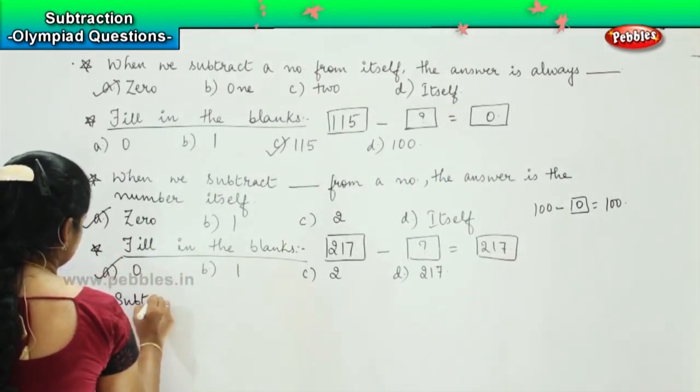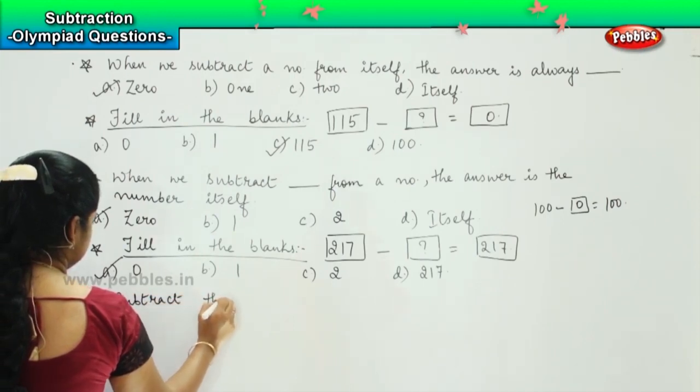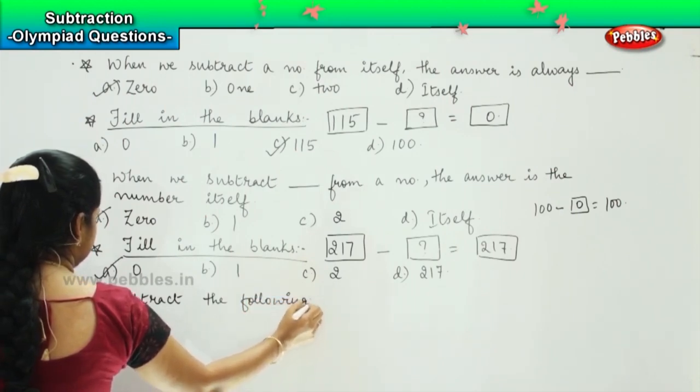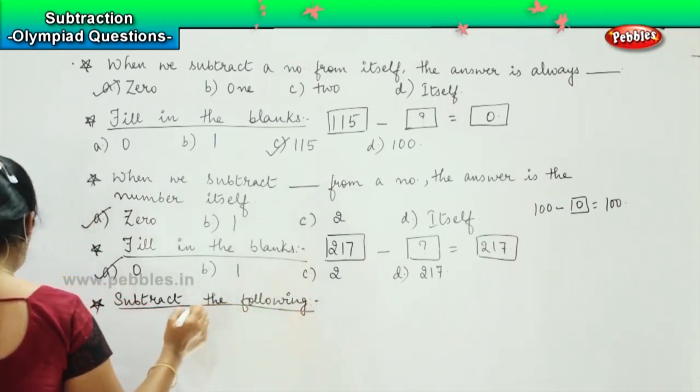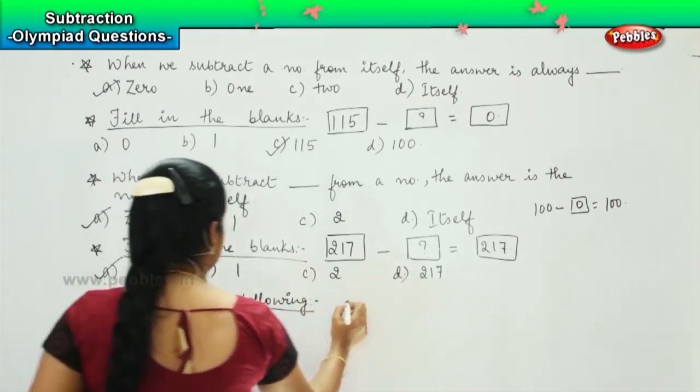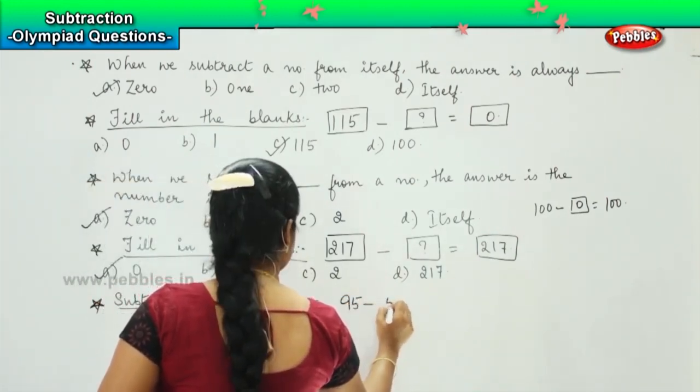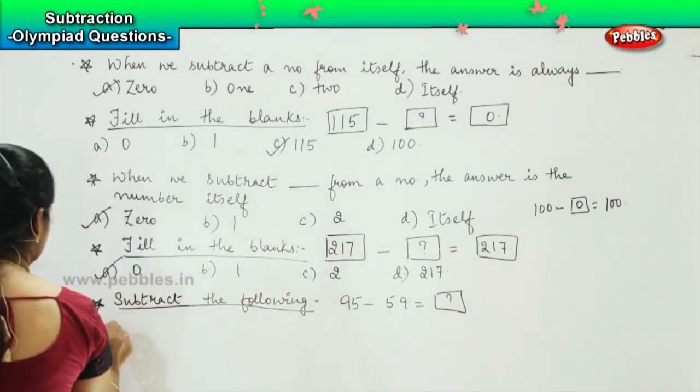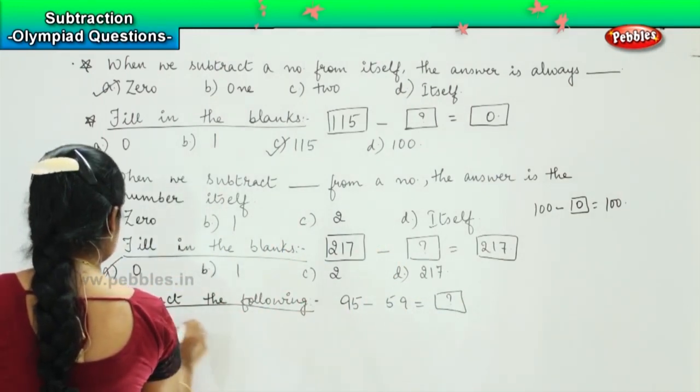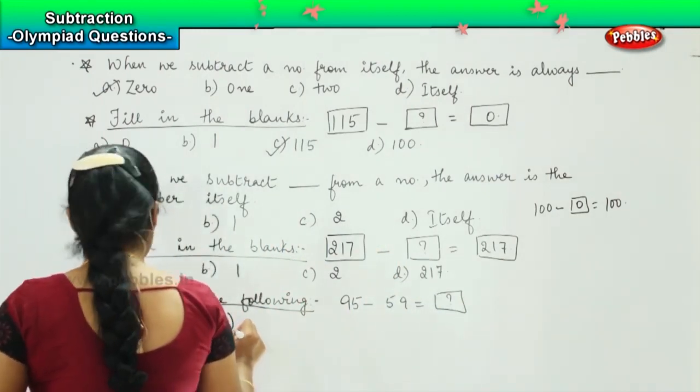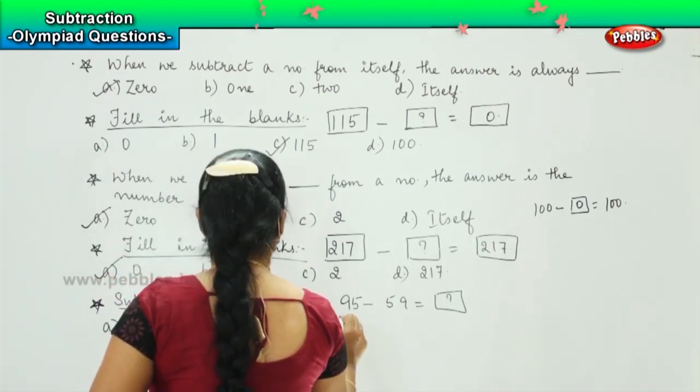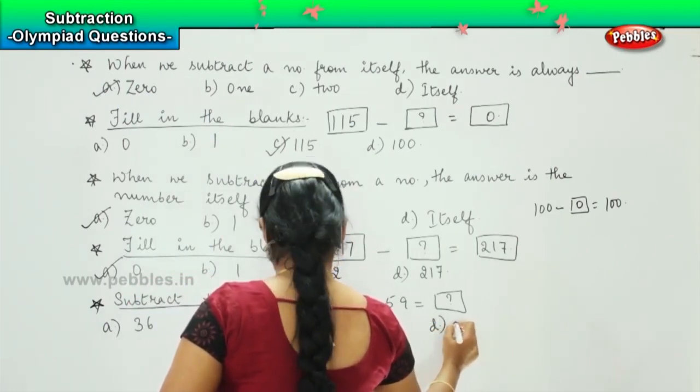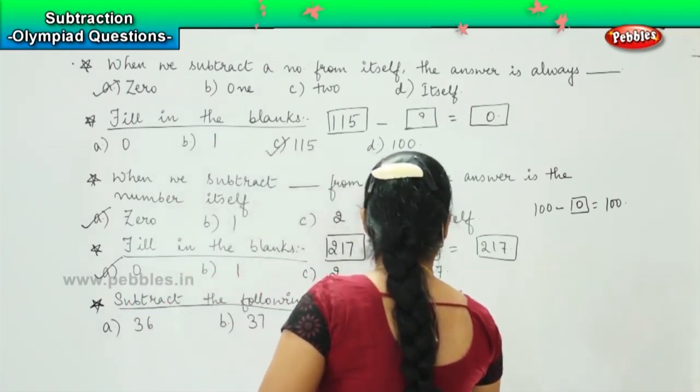Subtract the following. Okay. And your question is, 95 minus 59 equals to, we need to find the answer. Option a) 36, option b) 37, option c) 38, and option d) 86.